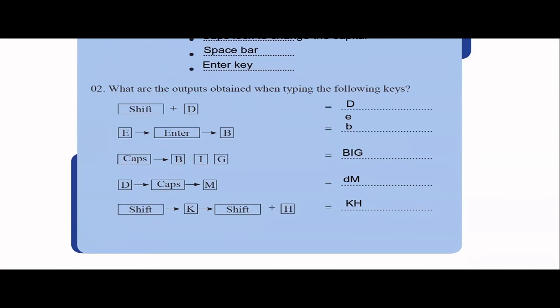They're asking what outputs are obtained when typing the following key combinations. In a usual keyboard when you type it will be simple lowercase letters. If you press Shift and letter D, you will get capital D. Here, pressing the Enter key and then letter B — these should be simple letters because in the default keyboard without pressing Shift or Caps Lock, it will be lowercase. So after pressing Enter, letter B will go to the next line. The output should be: E on one line and B on the next line.